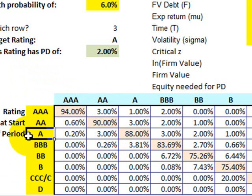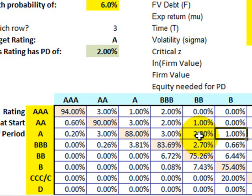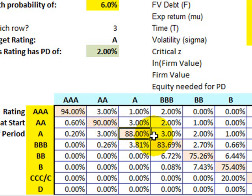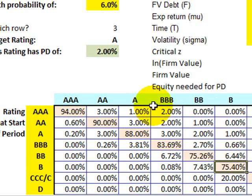This is a single-period matrix. It tells us that if a firm starts at one of these credit ratings — for example, single A — these are the probabilities that the firm will migrate into another rating class during the single period. A firm that starts at single A has a 0.2% chance of being upgraded two notches to triple A, a 3% chance of being upgraded a single notch to double A, and fully an 88% chance of remaining stable at single A. The diagonal has the largest probabilities because over a single period, the highest probability is that the firm will remain stable in its rating class. We need this as an input.